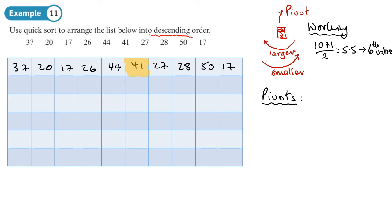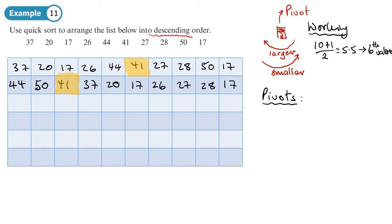Values already larger than 41 on the left stay where they are — that's 44. Values already smaller than 41 on the right also stay: 27, 28, and 17. The 50 pivots across to the left of 41. Values smaller than 41 that need to pivot across are: 37, 20, 17, and 26, which move to the right of 41. This creates two sub-lists.